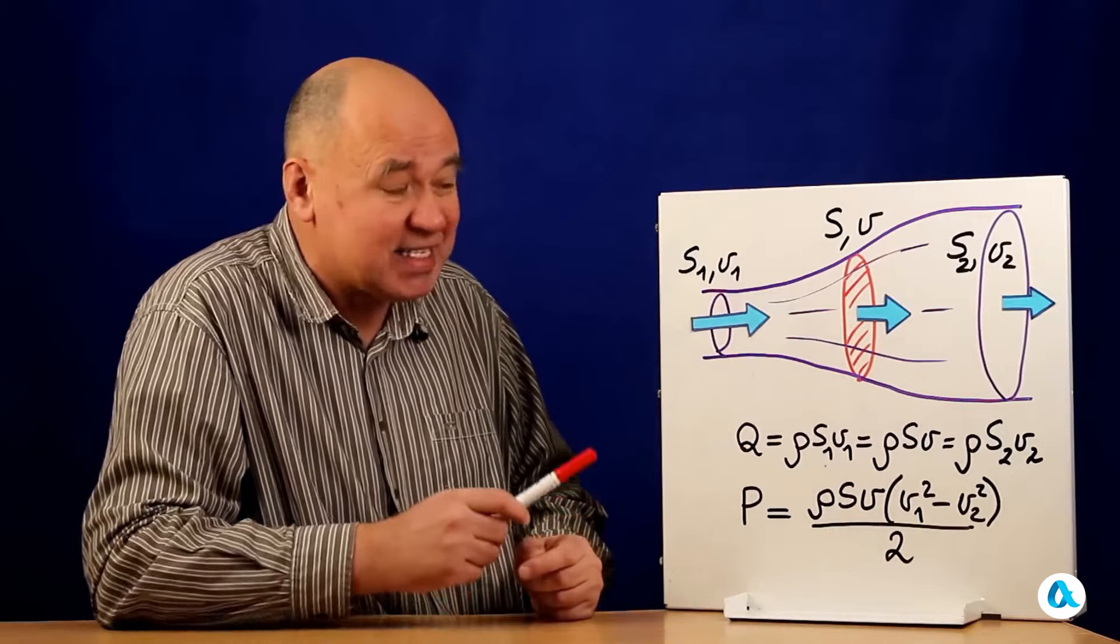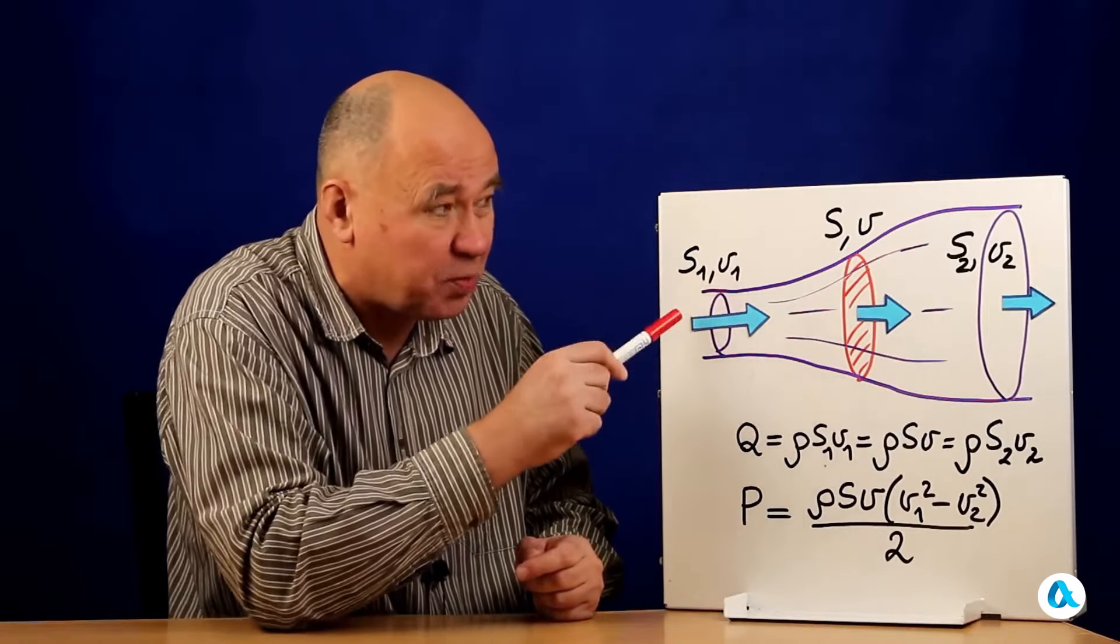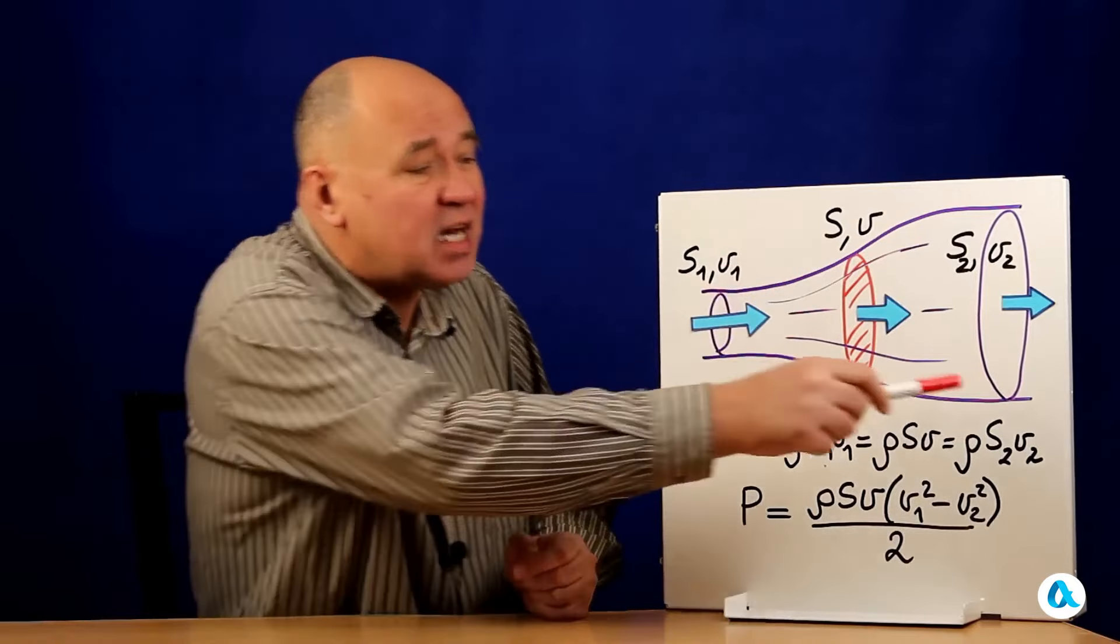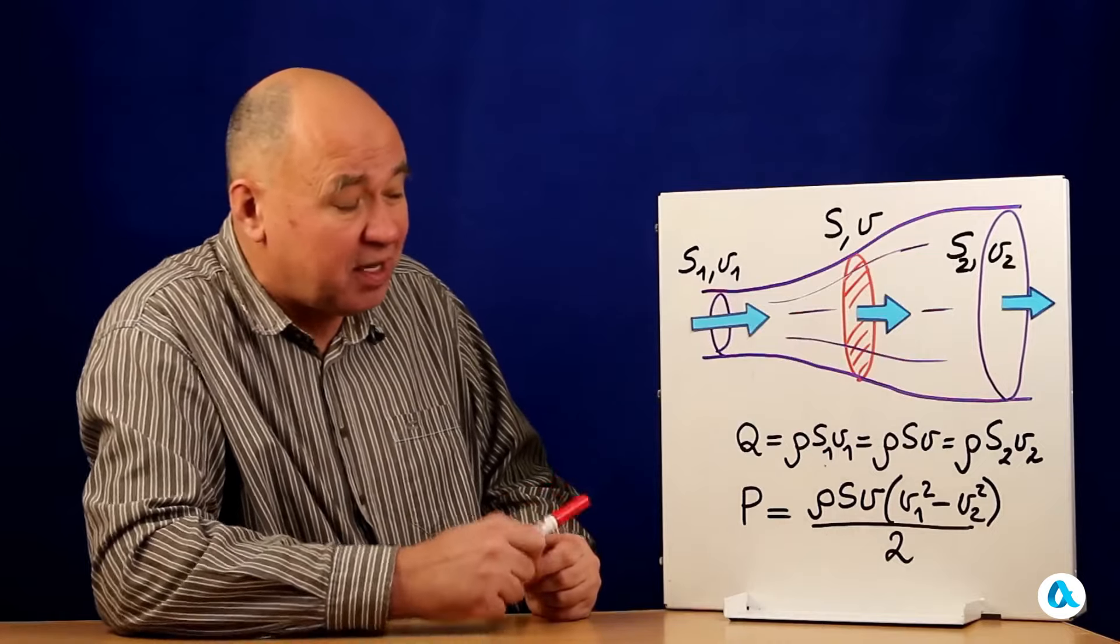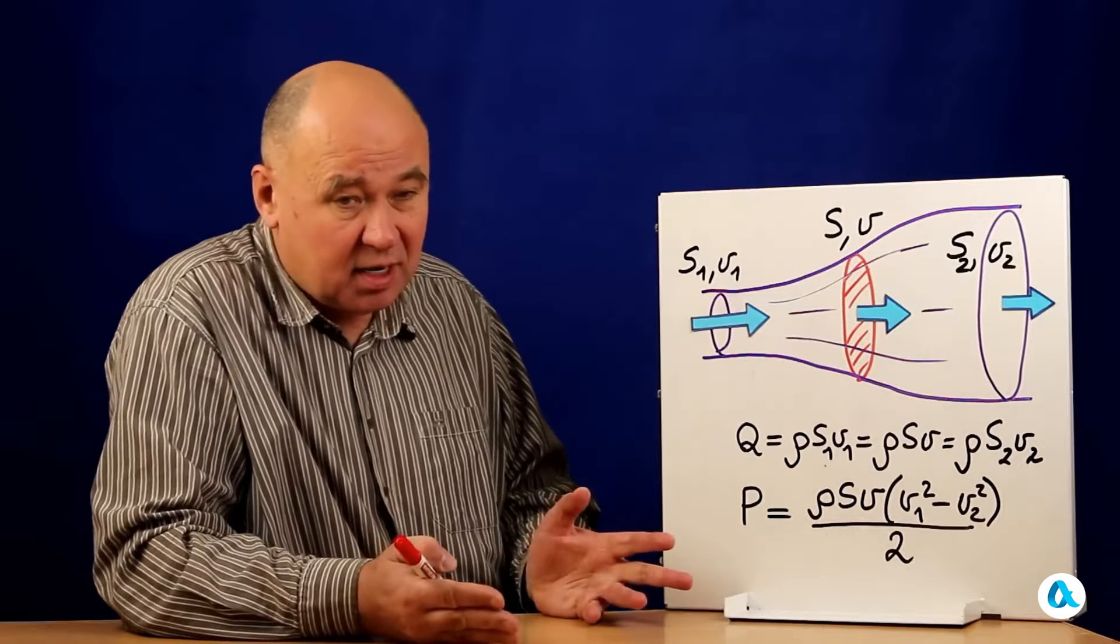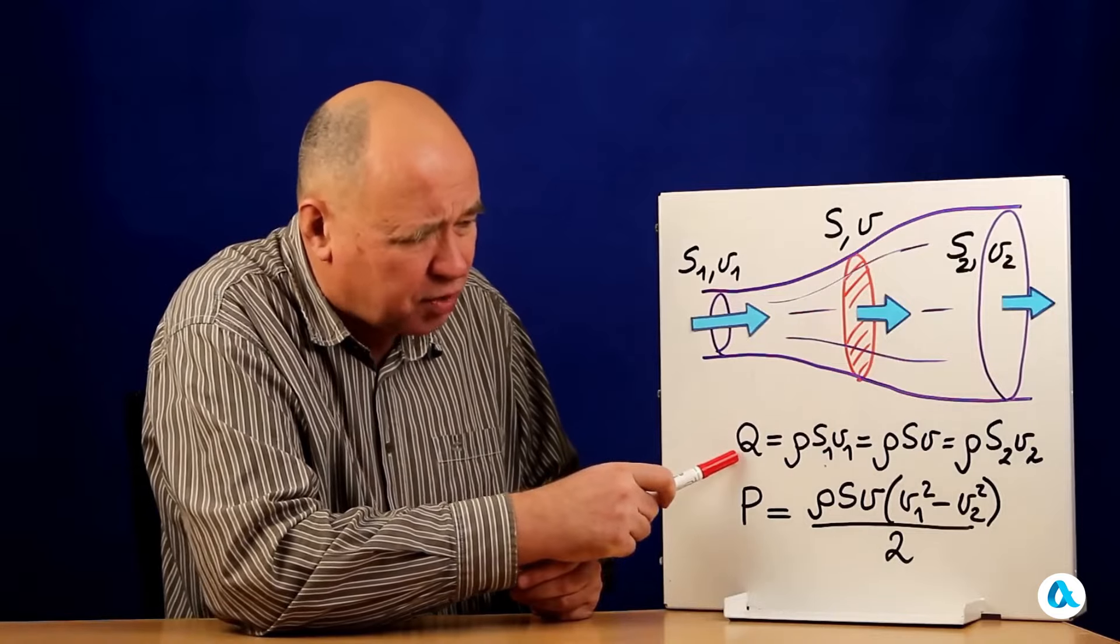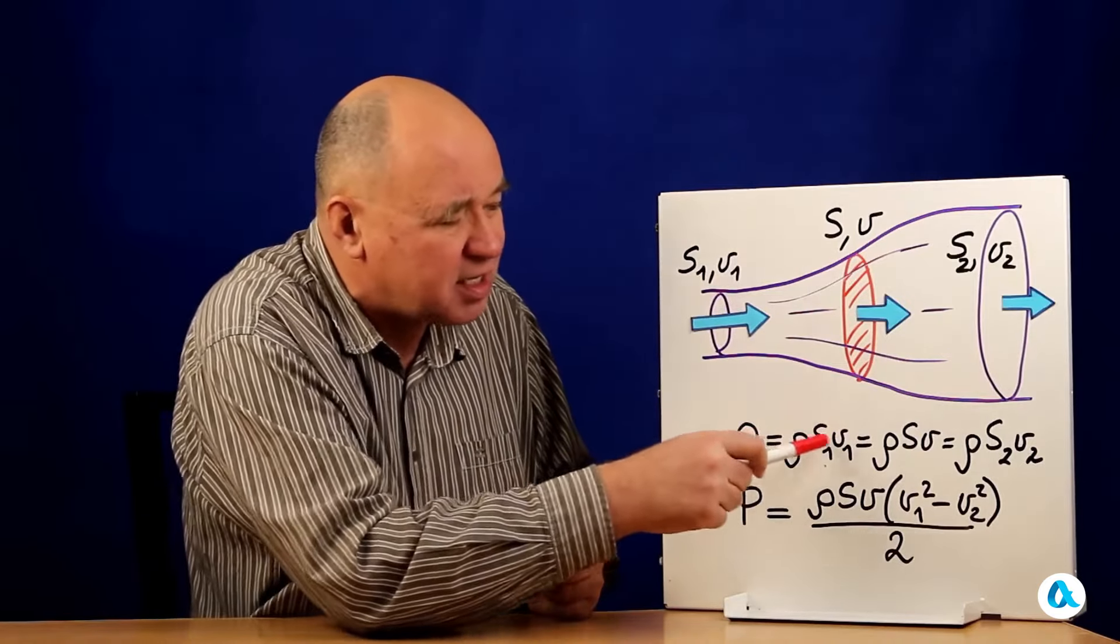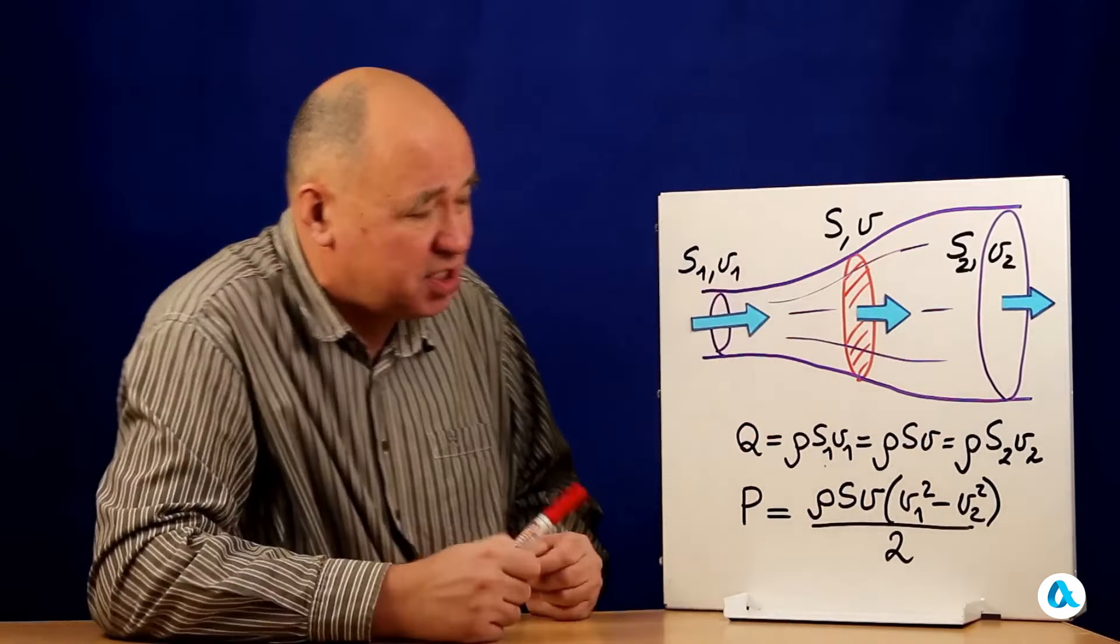This means that the cross sections corresponding to the area in front of the wind turbine for this tube should be smaller than the cross section of the wind turbine itself, and behind the wind turbine, on the contrary, larger. And at the same time, the law of conservation of mass, also known as the continuity equation, is fulfilled. So this q, which is ρsv, must be the same in all sections: s₁v₁, s₂v₂ in all three sections.